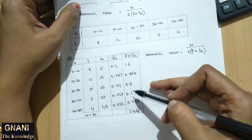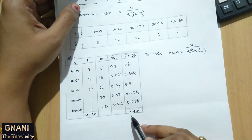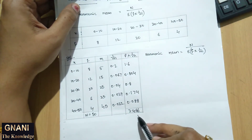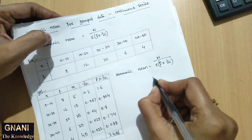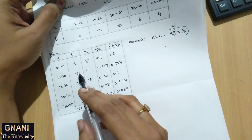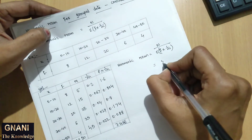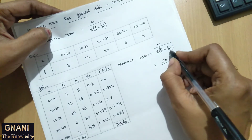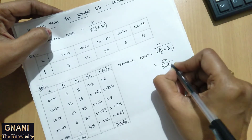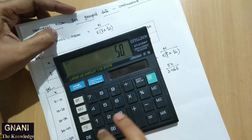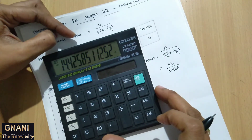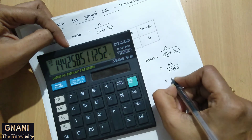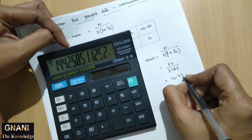So summation of f into 1 by m — the total value is 3.466. Now applying the formula: harmonic mean equals N by summation f into 1 by m. Here N means total frequency, which equals 50. So harmonic mean equals 50 divided by 3.466, which equals 14.43. This is the harmonic mean.